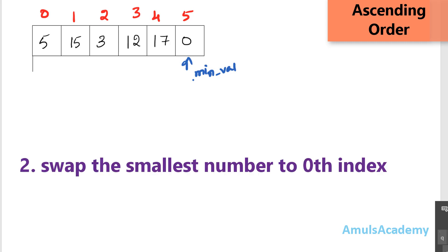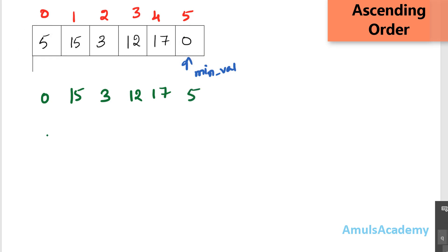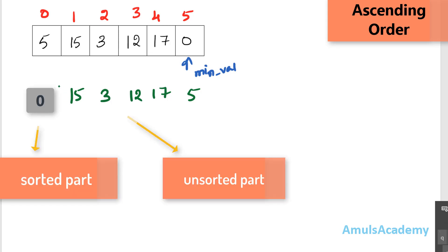The second step is to place the smallest value at the 0th index. We need to swap value 5 and 0. After step 2 we get: 0, 15, 3, 12, 17, 5. Now there are two parts in the list — a sorted part and an unsorted part. Here 0 is the sorted part, and 15, 3, 12, 17, and 5 are the unsorted part. Since we found the smallest value and placed it at the 0th index, that position is now sorted.